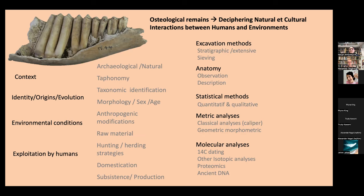Other extremely important things I want to come back to are the excavation methods, which are very important in how we can get information from these bone assemblages. Whether you make a stratigraphic excavation or an extensive excavation, whether you sieve or not, you will get different types of information. And of course another extremely important field in archaeozoology is anatomy — first of all, observation of morphology and its description.